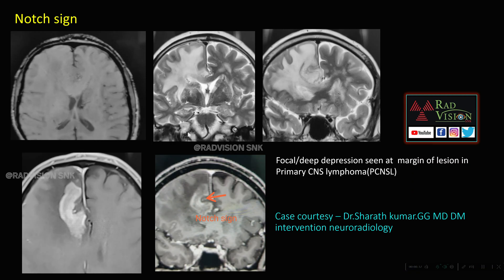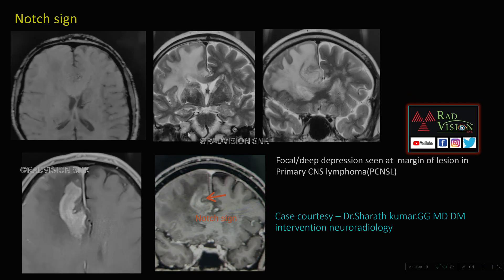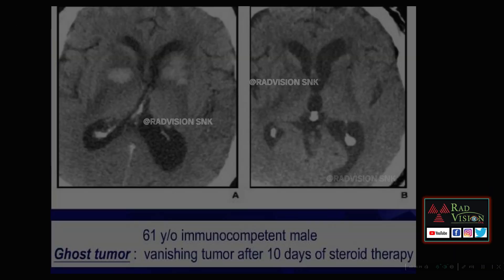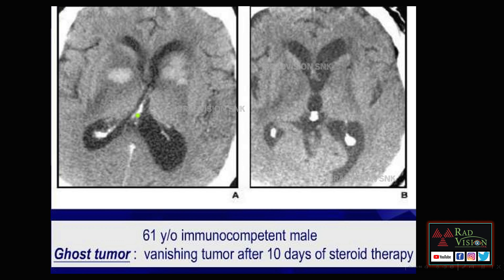It is called a ghost tumor because these hyperdense lesions in the bilateral capsulo-ganglionic region, after steroid therapy for 10 days, completely disappear — hence called a vanishing tumor or ghost tumor. This is characteristic of CNS lymphoma.